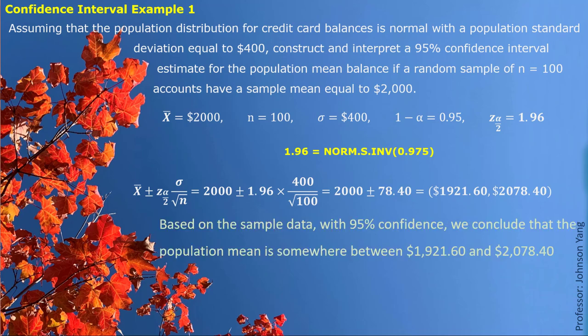The meaning of this confidence interval is: with 95% confidence, we can conclude that the population mean credit card balance is between $1,921.60 and $2,078.40. The margin of error is $78.40.